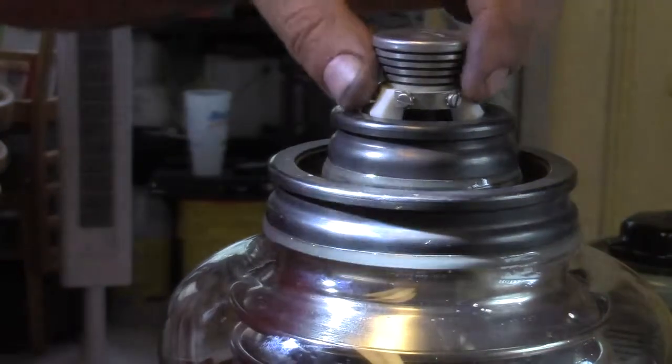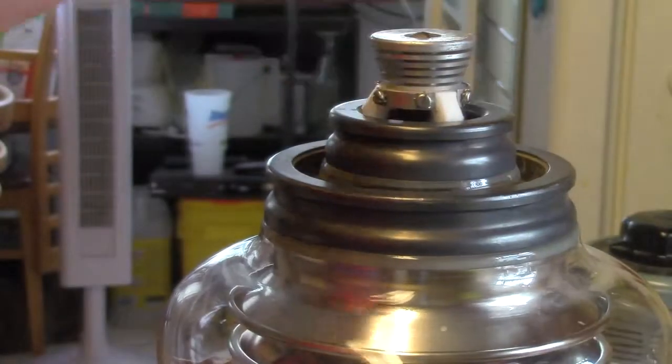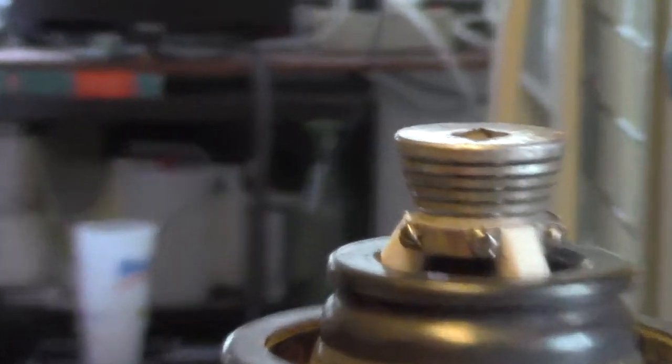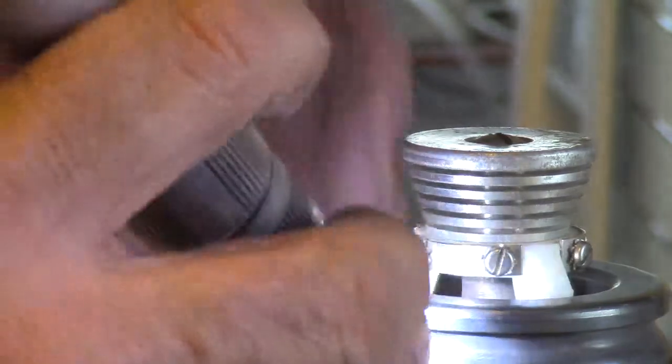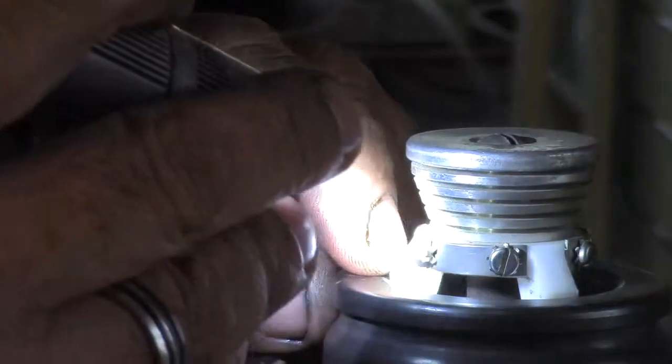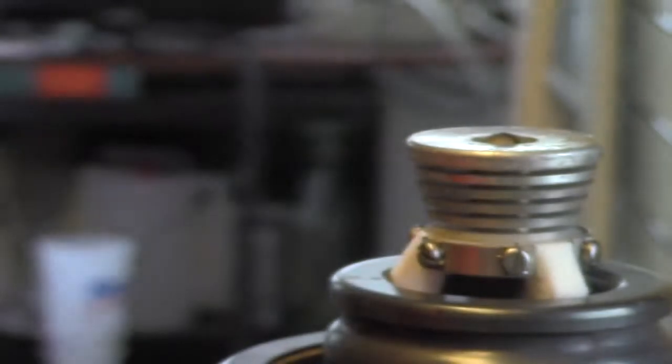And there are these little screws here. I don't think they're attachment points. I think they're just to center that up. I'm not sure what this insulator is. It's some kind of ceramic. Man how am I gonna get this to fit that amp? This is never gonna work.